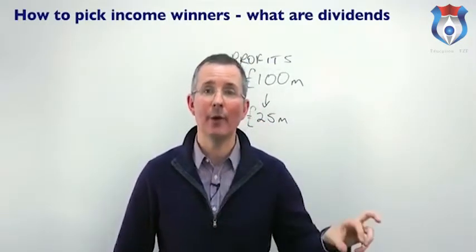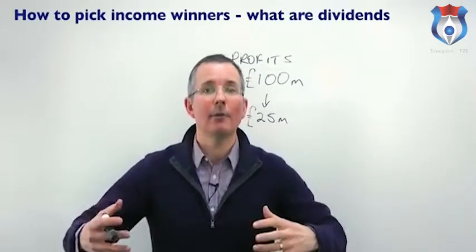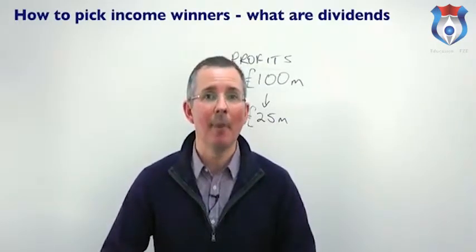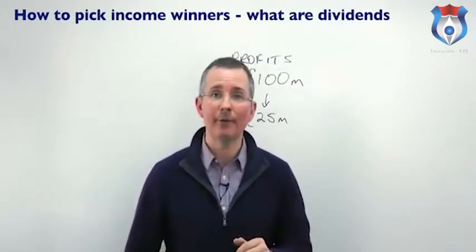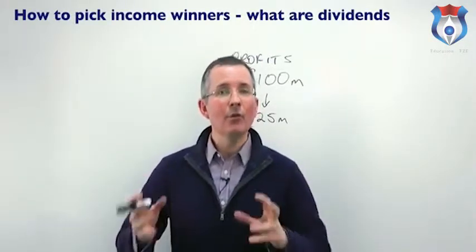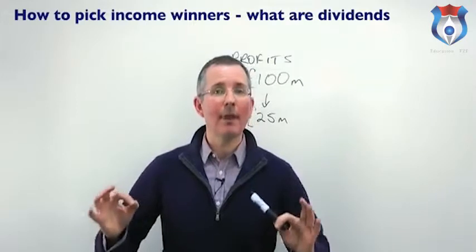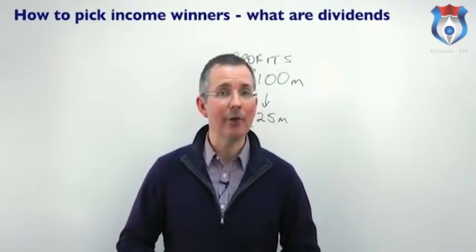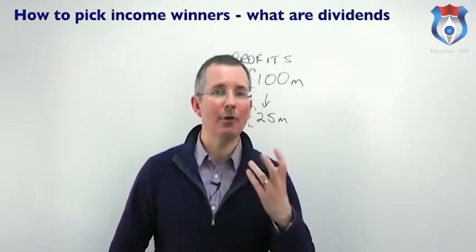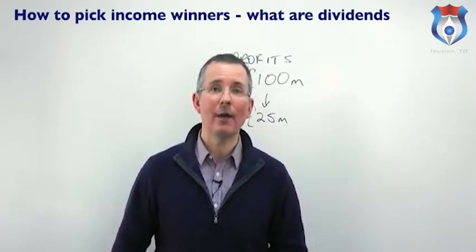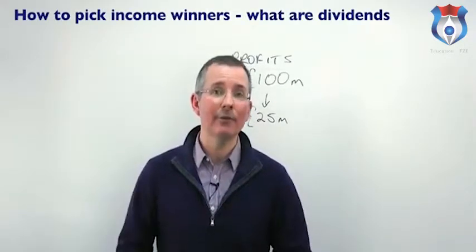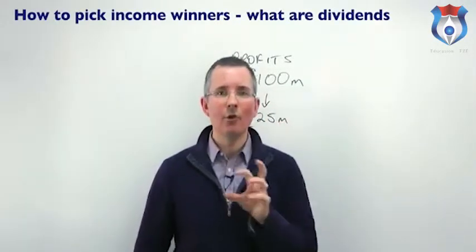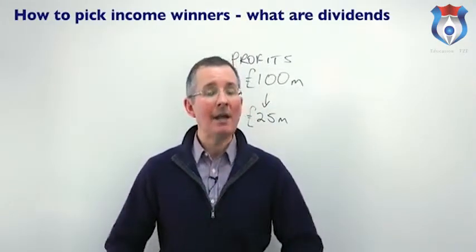The exact proportion that you get of that £25 million depends on how many of the company's ordinary shares you own. If the company has issued 100 million ordinary shares and you own 10% of them, you'll get 10% of the total payout. You'll normally get it in two chunks — directors of big companies typically pay 50% of the annual dividend at the halfway stage (the interim) and the rest once the annual general meeting has taken place after the end of the financial year.